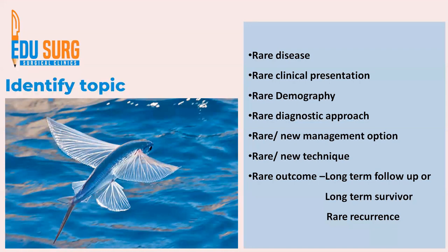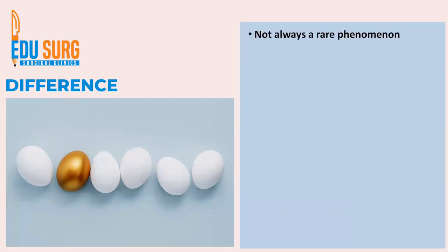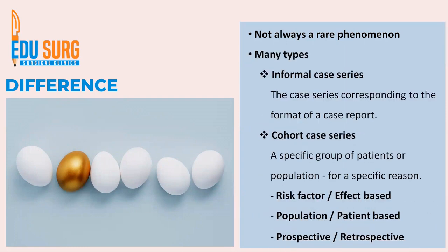When you identify a topic for a case series, similar to a case report, anything that is rare qualifies — a rare disease, rare presentation, a rare diagnostic or management approach, a new technique, or a rare outcome such as a long-term survivor after cancer treatment. However, you don't always get a rare phenomenon. In these cases, the various types of case series can be utilized to publish your findings.